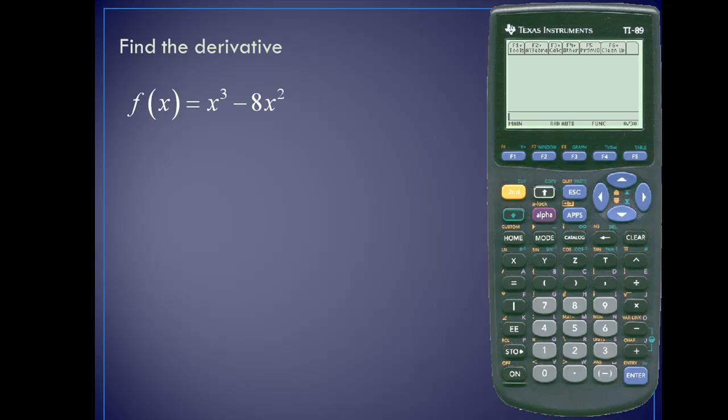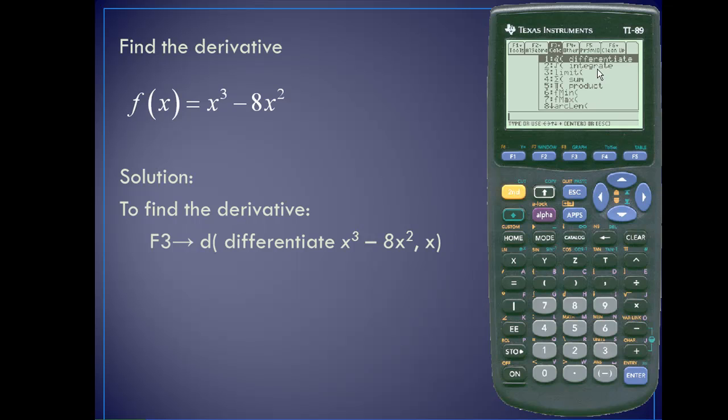Let's take a look at the first example. Let's find the derivative for the function x to the third power minus 8x square. To find the derivative, we'll press f3. The differentiate function is the very first function, so we'll press enter. Next, we'll put in our expression x raised to the third power minus 8x square.